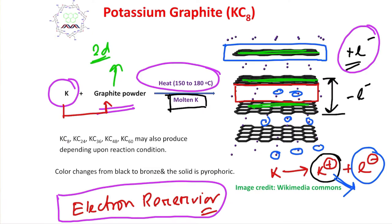By the way, based on the stoichiometry of potassium and graphite, you can get many combinations: KC8, KC24, KC36, KC48, KC60 may produce depending upon reaction conditions like temperature and ratio.